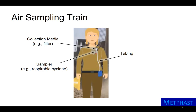The sampler selectively allows only the contaminant of interest to reach the collection media. An airflow pump, typically mounted at the waist, pulls air through the entire system.